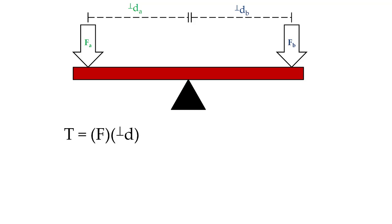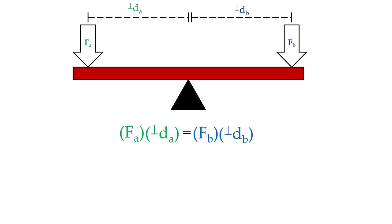One way to quantify torque is the force times the perpendicular distance. Previously we said it was the perpendicular force times the entire distance — these express the same idea. If angular acceleration is zero, then torque A equals torque B. Substituting in the equation, we now have force A times perpendicular distance A equals force B times perpendicular distance B.